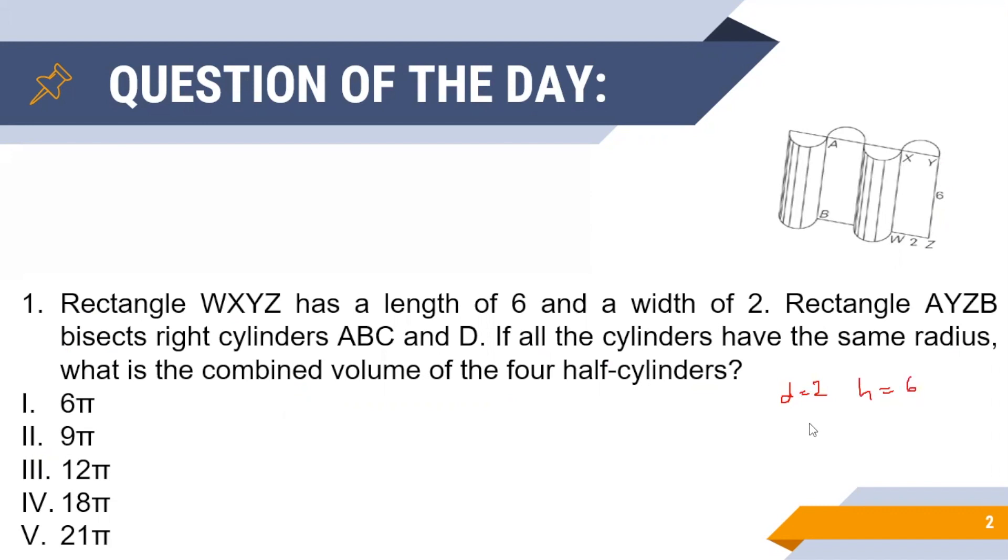Now since the diameter of the full cylinders is 2, the radius will be 1. Thus, the volume of one full cylinder is equal to π × 1² × 6. And since the four half cylinders equal the volume of two full cylinders, this should be multiplied by 2. Thus, giving us an answer of 12π. That is option 3.